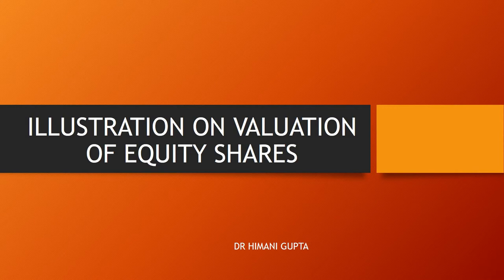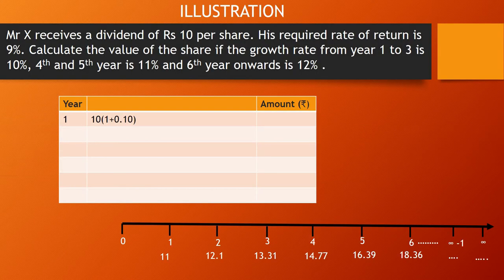If we have a growth dividend, it is divided into two parts: one when the growth rate is constant, and the second when the growth rate is variable. Today we are going to do the illustration when the growth rate is variable. When the growth rate is variable, it means that throughout the life of the equity share the company is going to change the growth rate — maybe one time, maybe ten times, or n number of times.